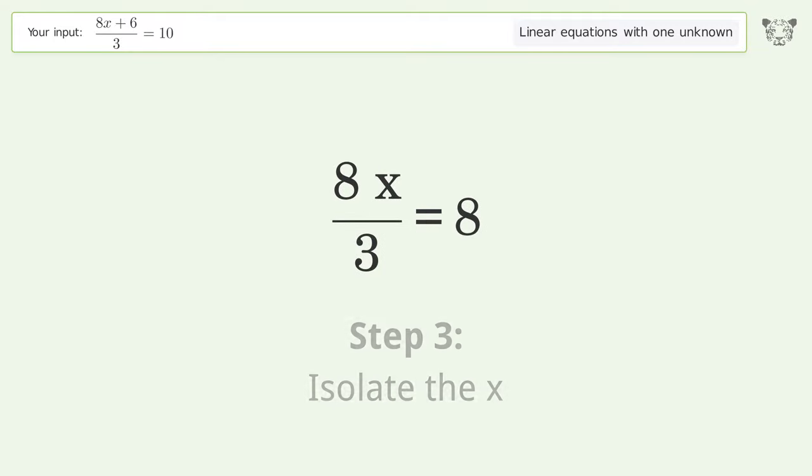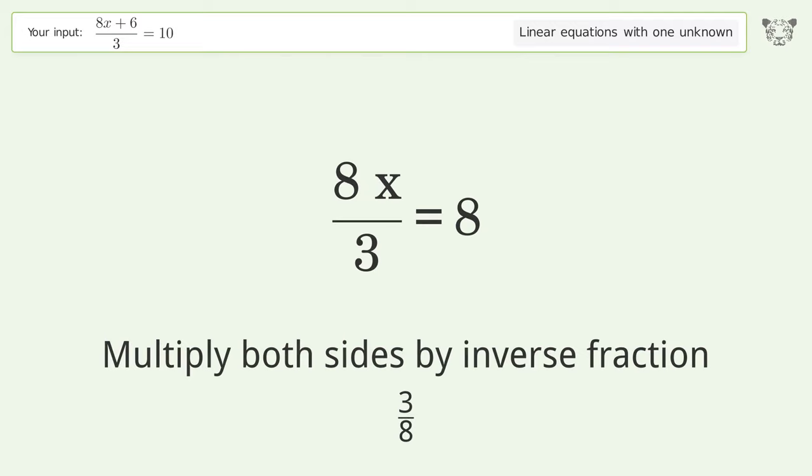Isolate the x. Multiply both sides by inverse fraction 3 over 8.